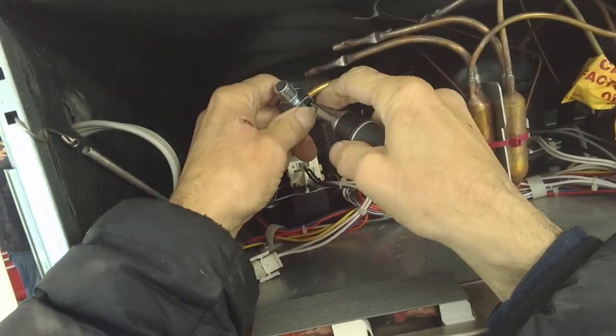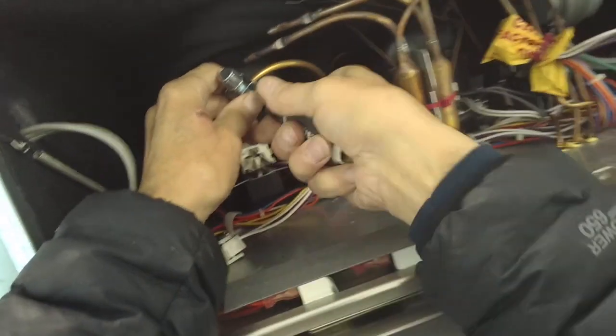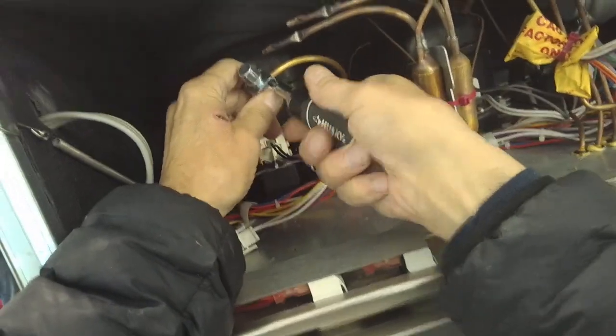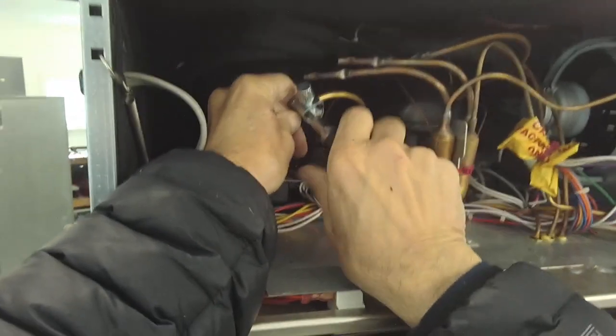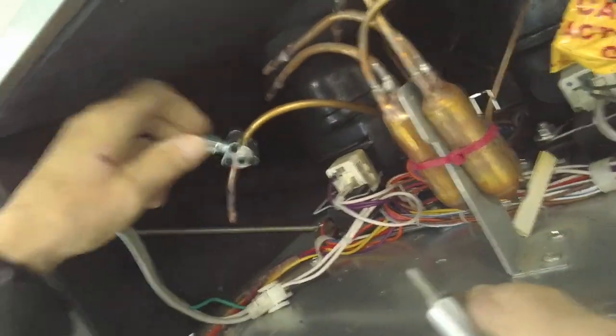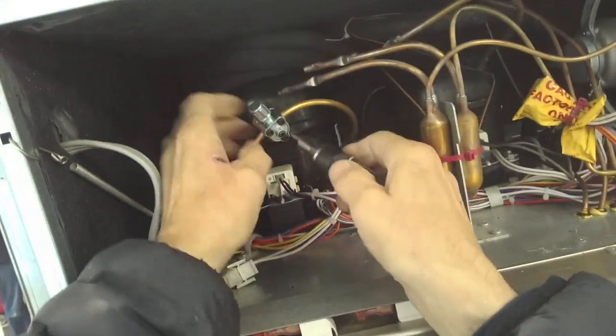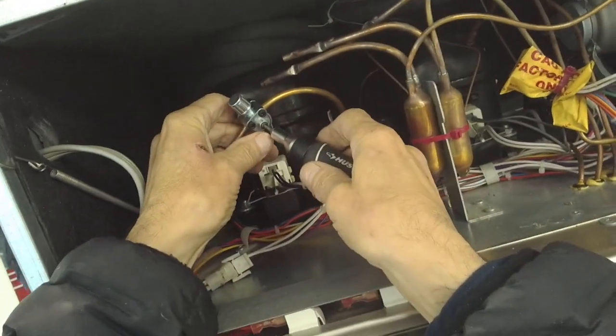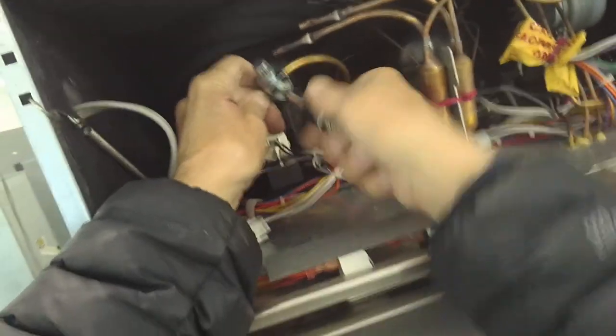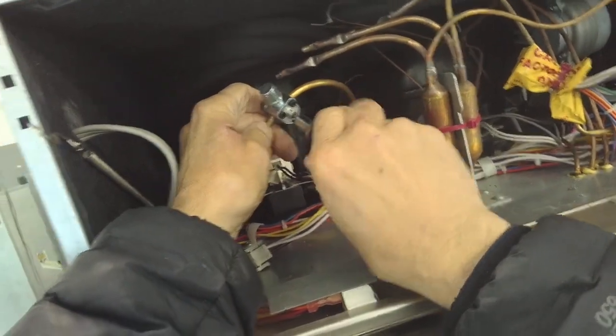Don't over tighten them, but then don't under tighten them either. Okay, that's on there. So the next thing you want to do is pierce the tubing by turning the center pin in until it stops.